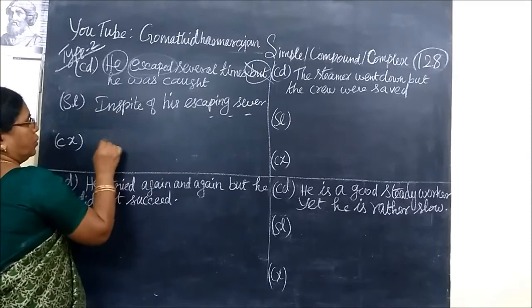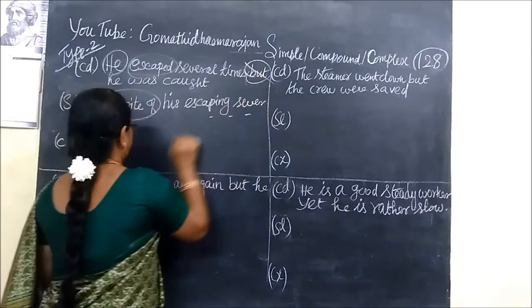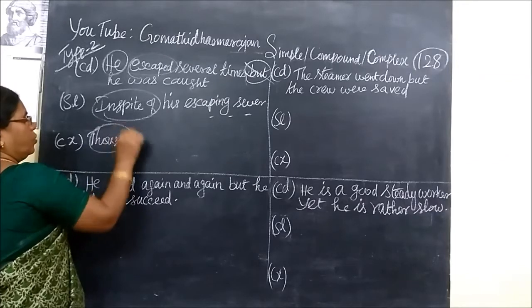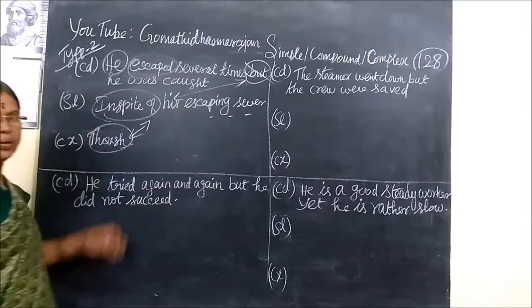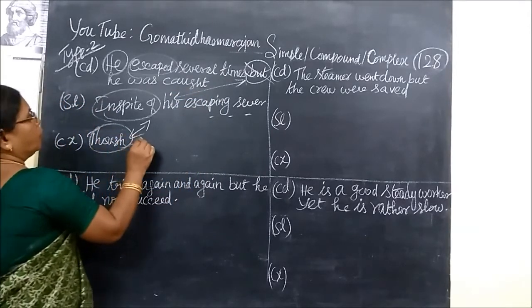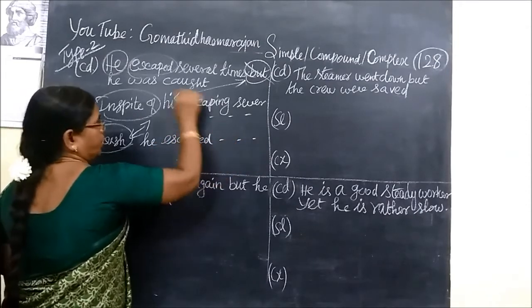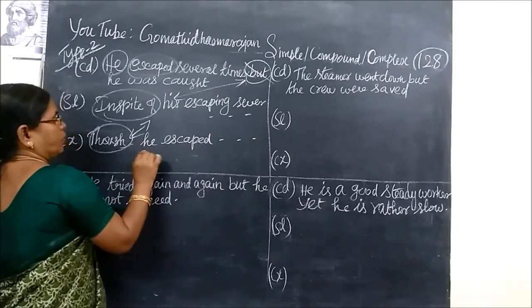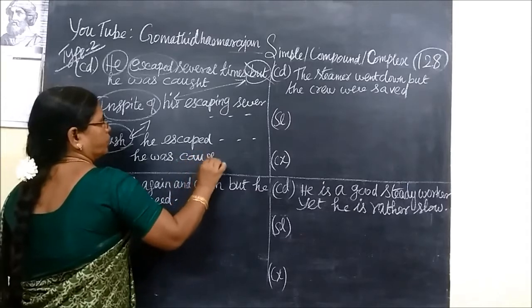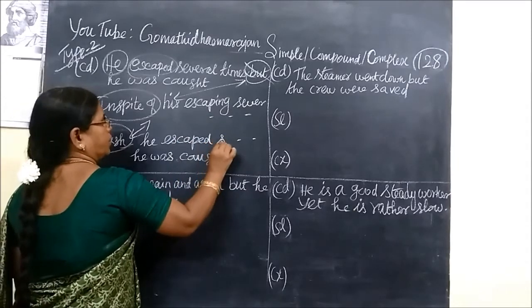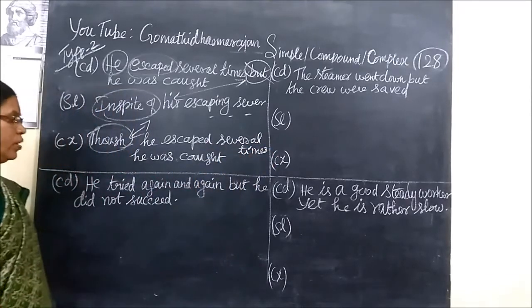Now we are writing using 'though' — here the complex group uses 'though.' So: Though he escaped several times, he was caught.